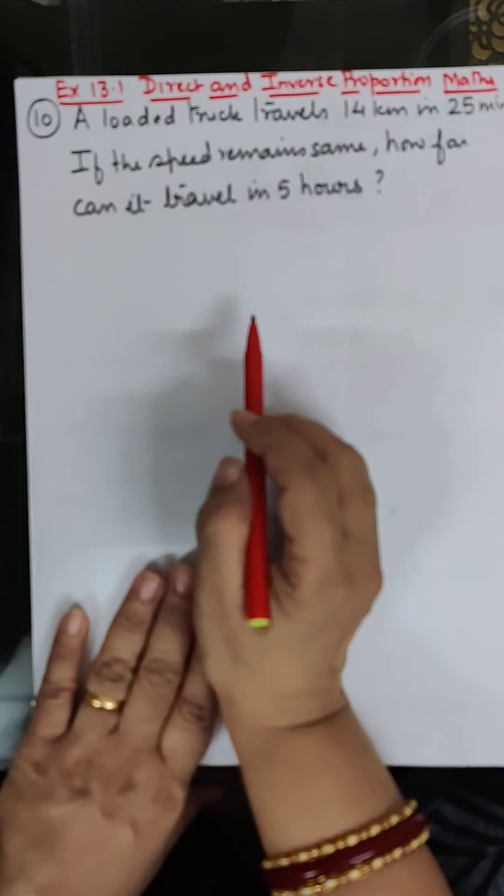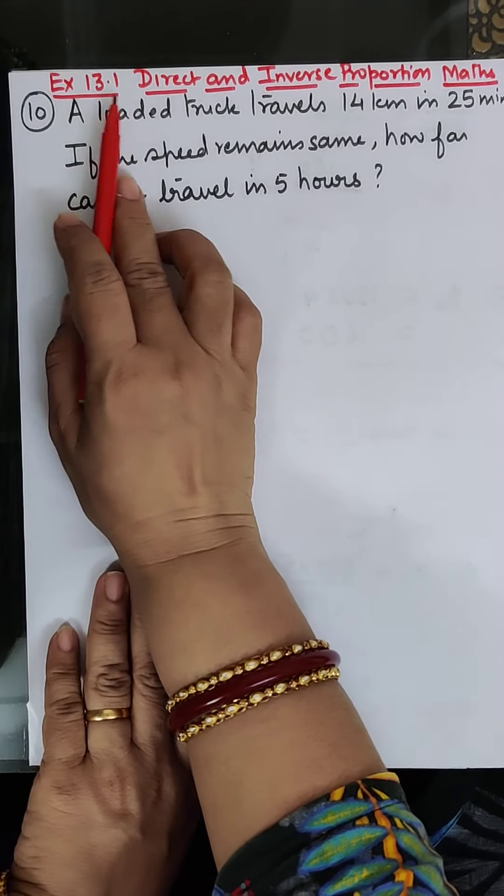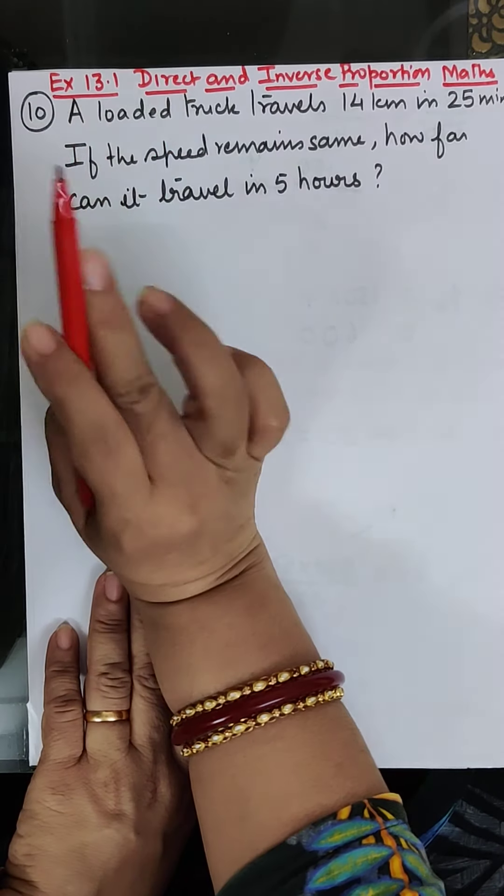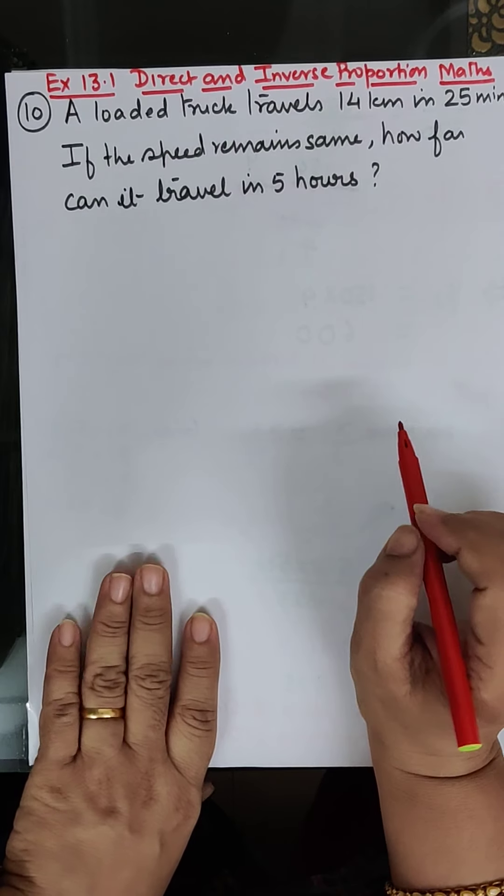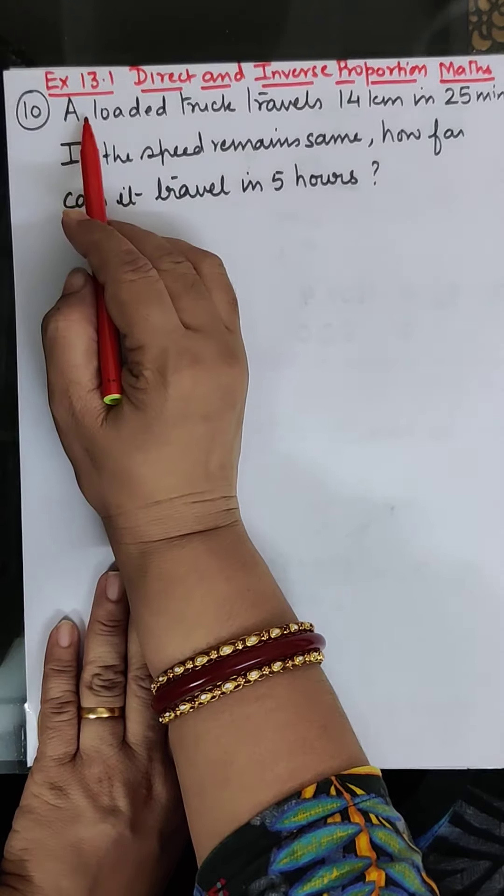Children, in today's class, I shall start with question number 10 of exercise 13.1. The topic is direct and inverse proportion. So, question 10 is: